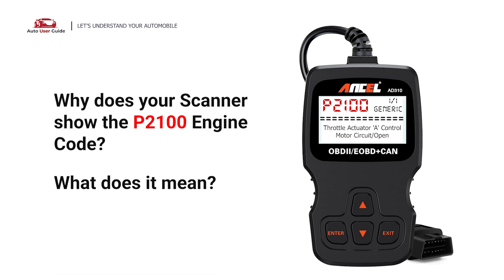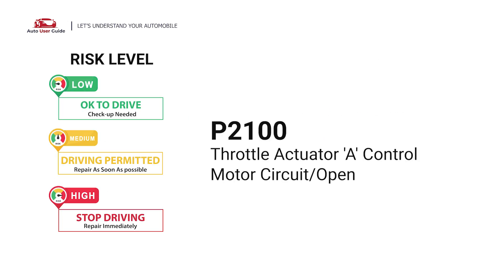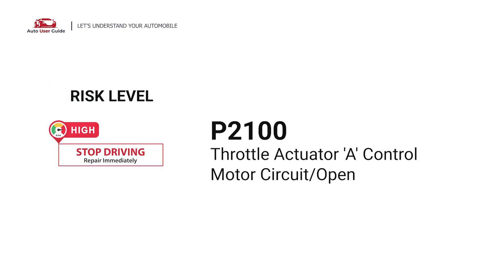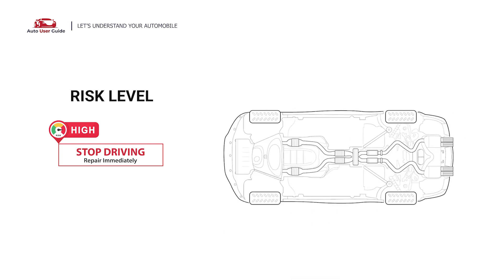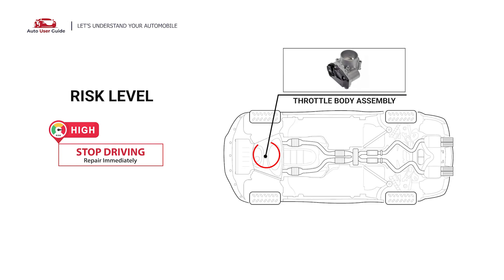Why does your scanner show the P2100 engine code? What does it mean? P2100 is a diagnostic trouble code for throttle actuator A, control motor circuit open. It indicates that the throttle actuator control motor circuit is open and the throttle actuator does not work. Under this circumstance, stop driving and repair your vehicle immediately.